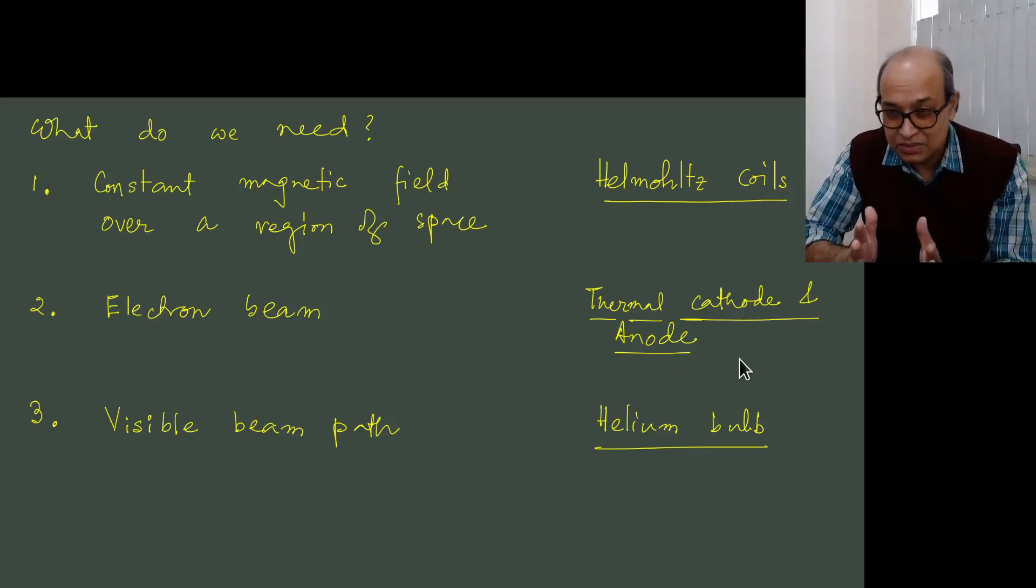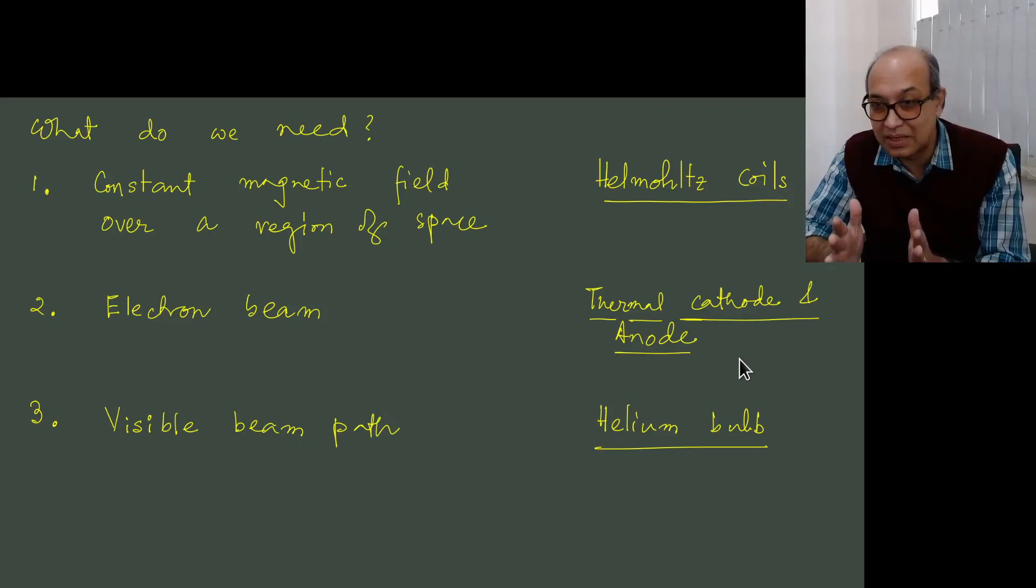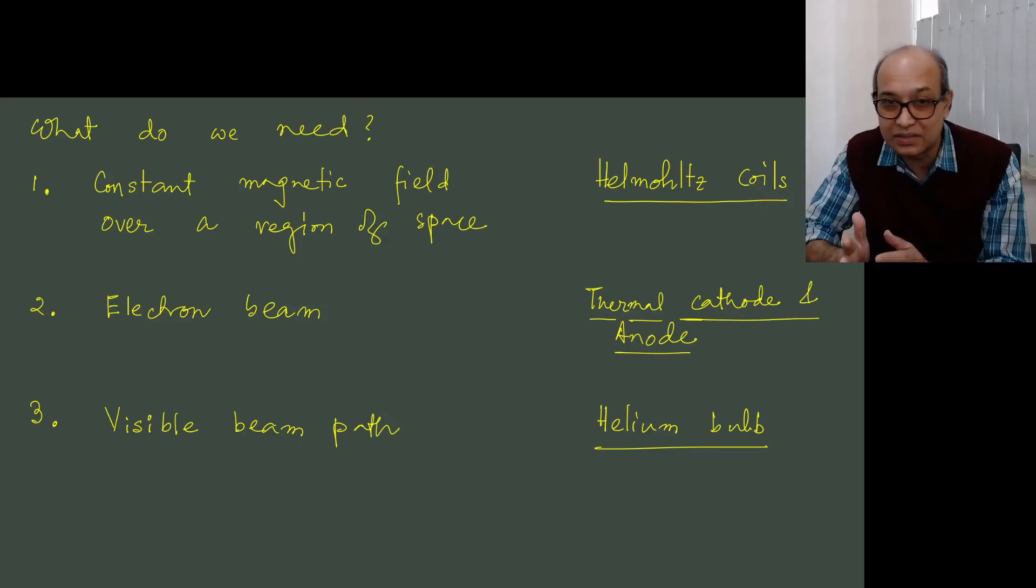So the anode will have a hole. Thermal cathode will produce electrons and these electrons will accelerate towards anode and will come out of it. We will get our beam.